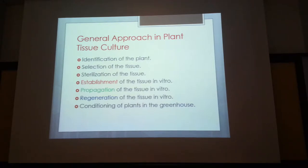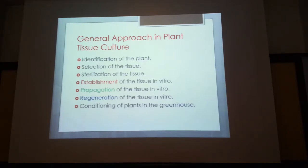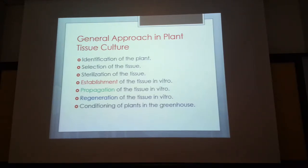Sterilization is a critical step. Once sterilized and your plant is established in vitro, in three to four weeks with no visible signs of fungus or bacteria, you can go into propagation — basically dividing the tissue and propagating it in many cultures. Then it proceeds to regeneration, conditioning, callus development, shoot induction, and finally transfer to the greenhouse.